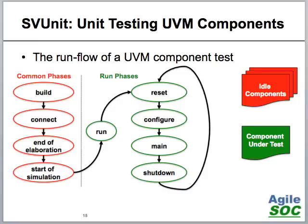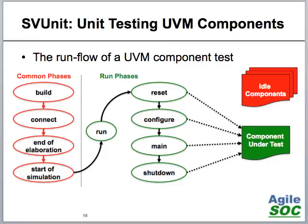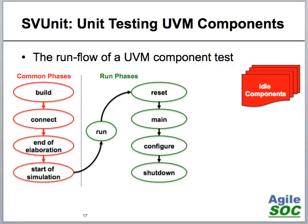When it comes to executing the run phases, only the applicable phase methods of our component under test are called, while the phase methods on our idle components aren't called at all. Our component under test can be taken through the run phases just once or multiple times by jumping backward from shutdown to reset and running ahead again through configuring, main, and shutdown. When we're done with the component we put it back on the shelf with the other idle components, then load a new component for testing or kill the sim and generate a report.